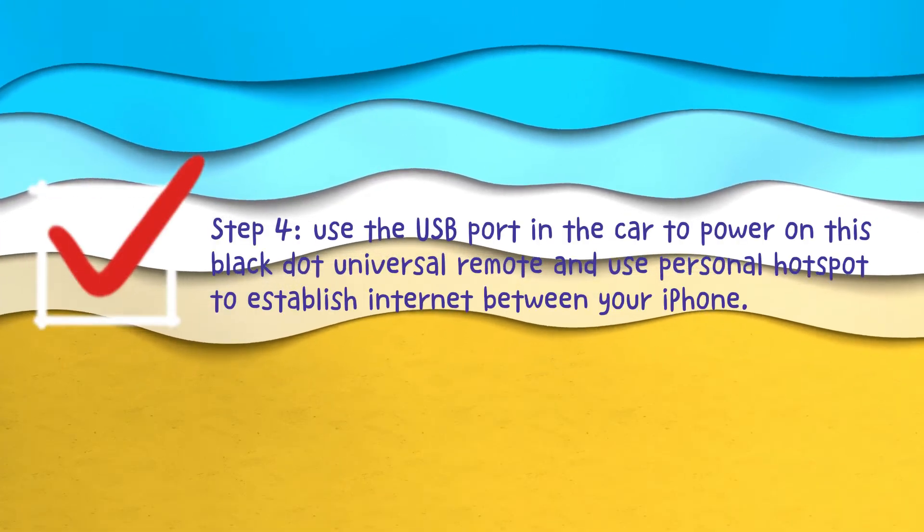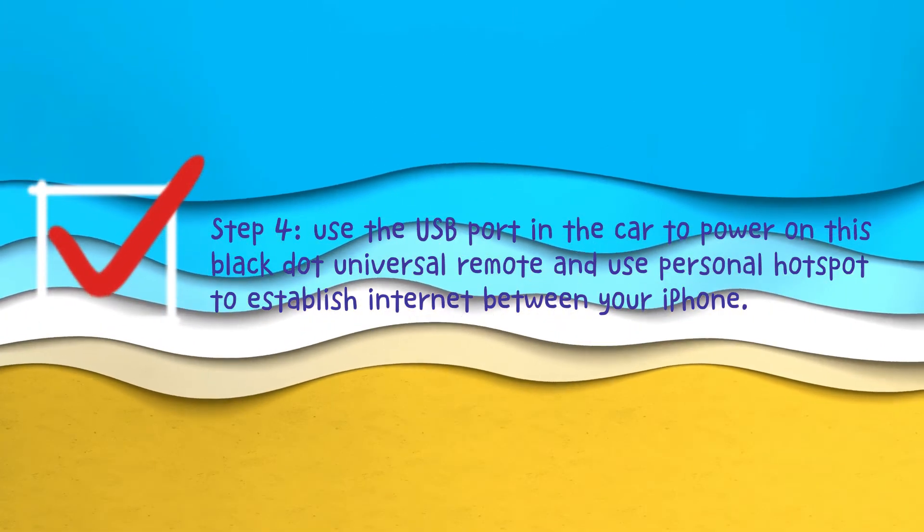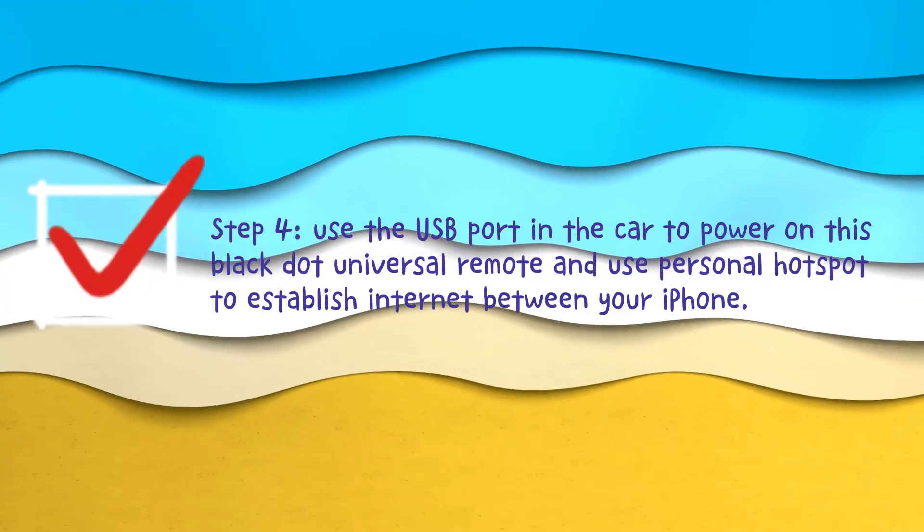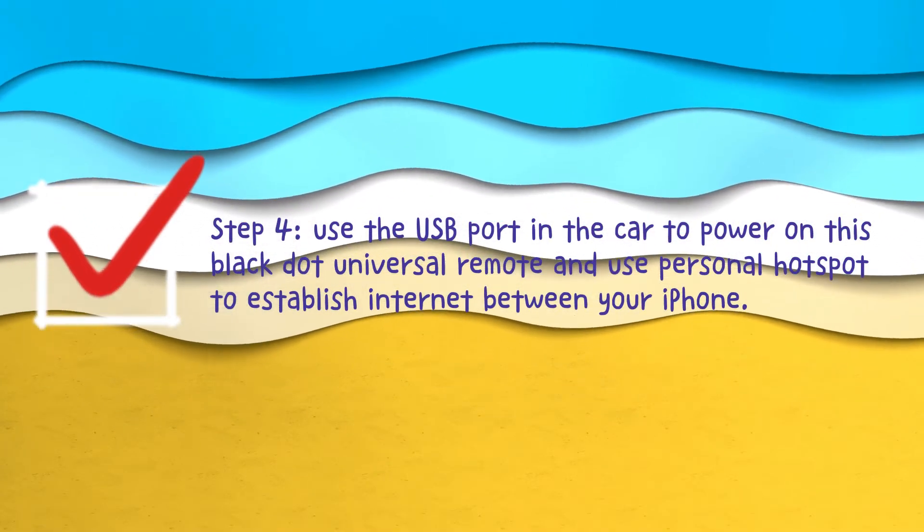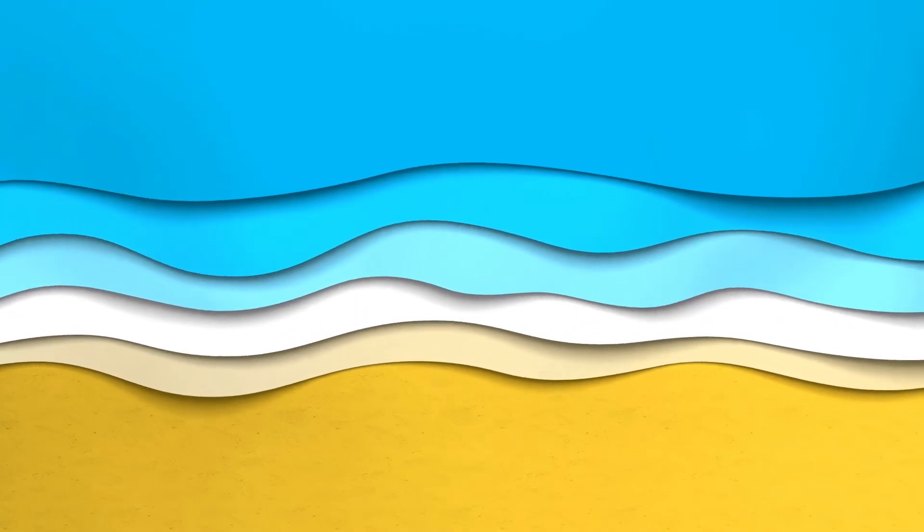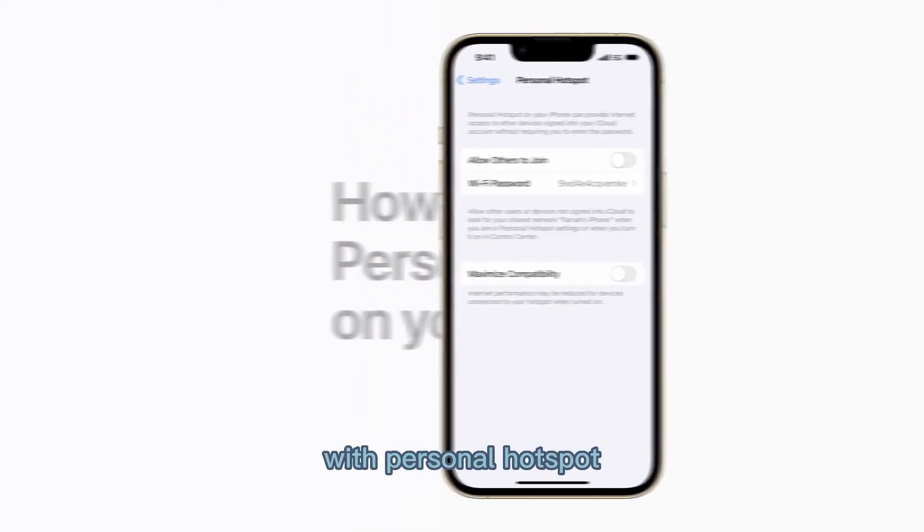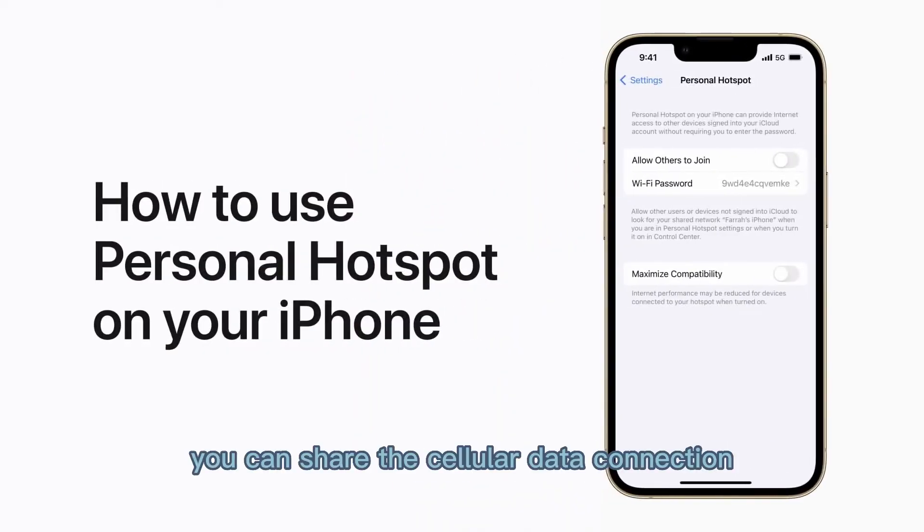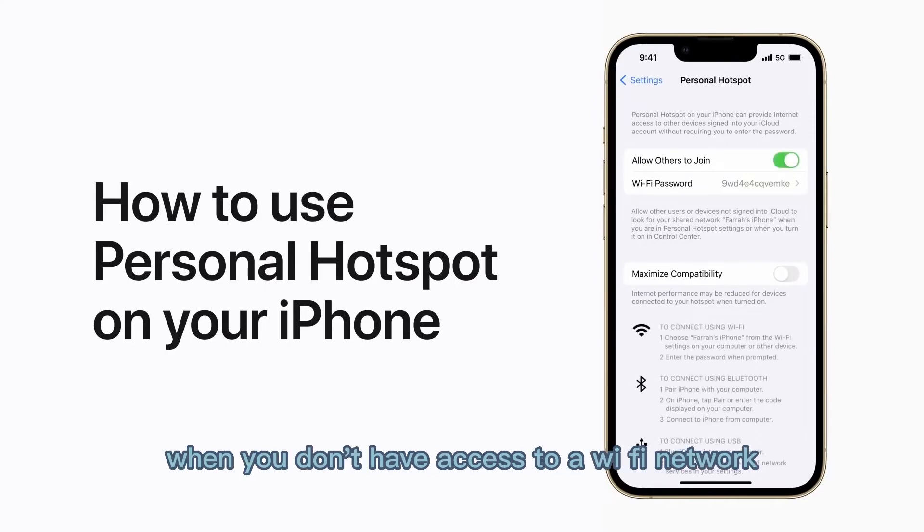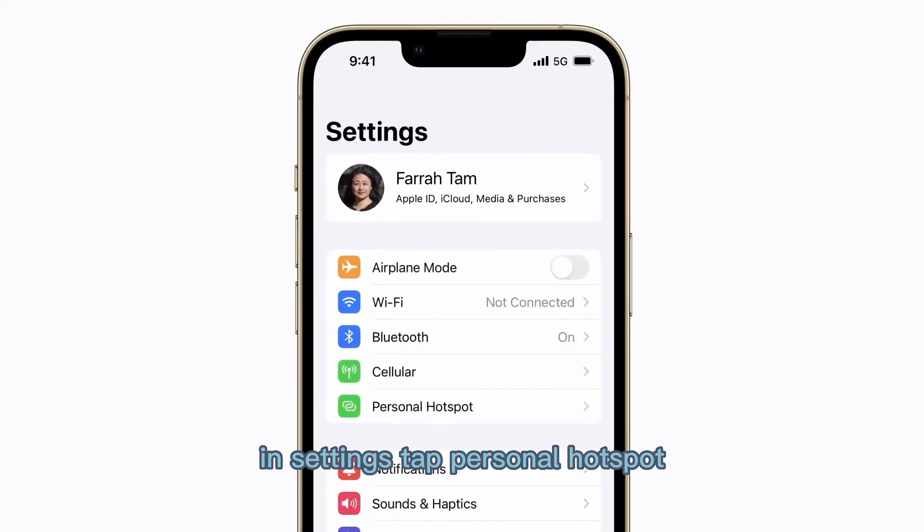Step 4: Use the USB port in the car to power on this universal remote and use Personal Hotspot to establish internet connection with your iPhone. With Personal Hotspot, you can share the cellular data connection of your iPhone with another device when you don't have access to a Wi-Fi network. In Settings, tap Personal Hotspot.